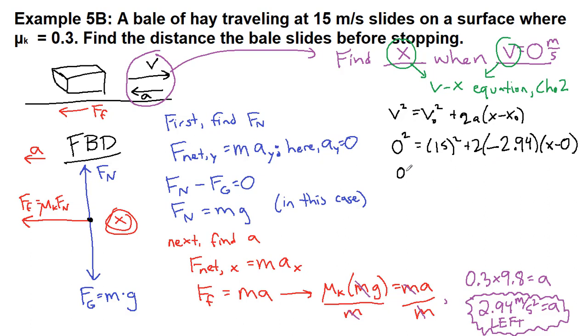All right. So let's simplify this a bit. So 0 equals 225 minus 5.88x. We will add 5.88x to both sides. And then we will divide, now that it's all by itself as a term, both sides by 5.88, to get that x is equal to 38.3 meters.